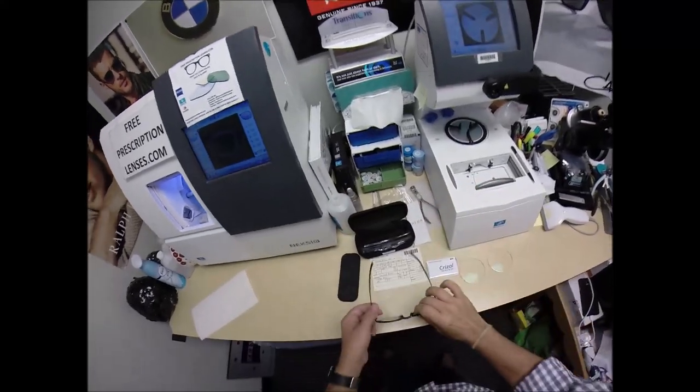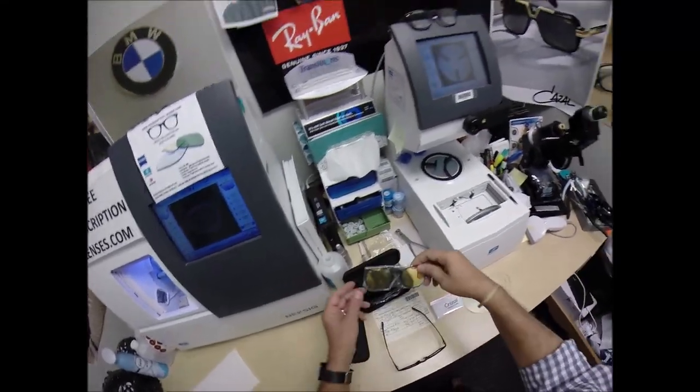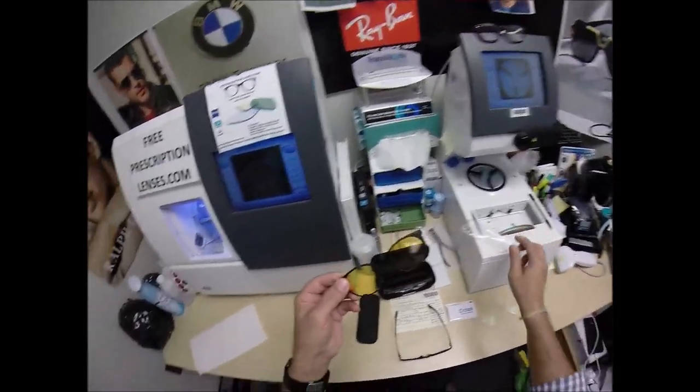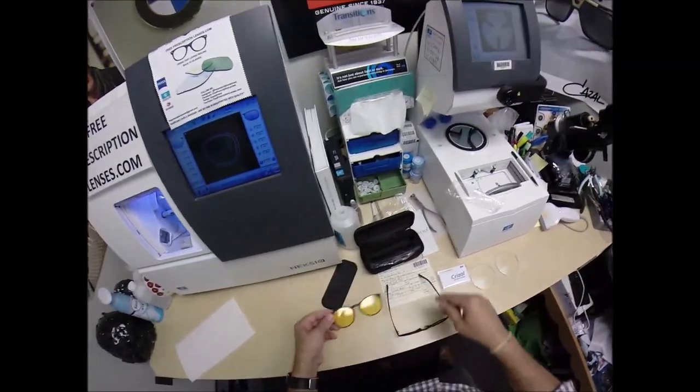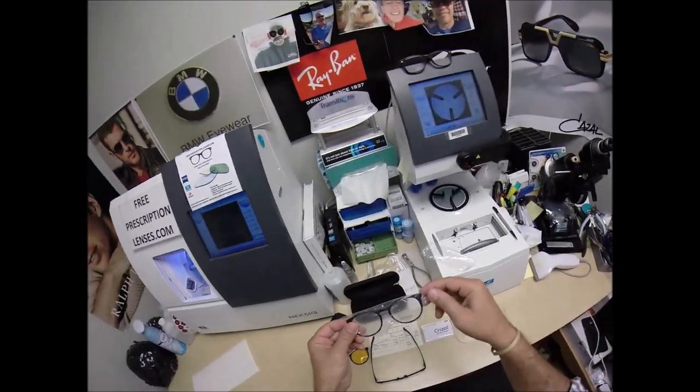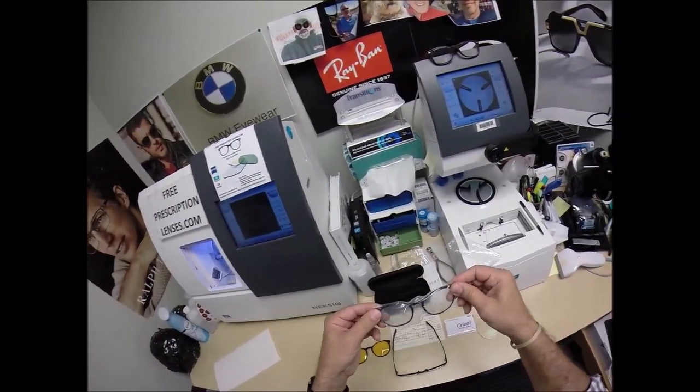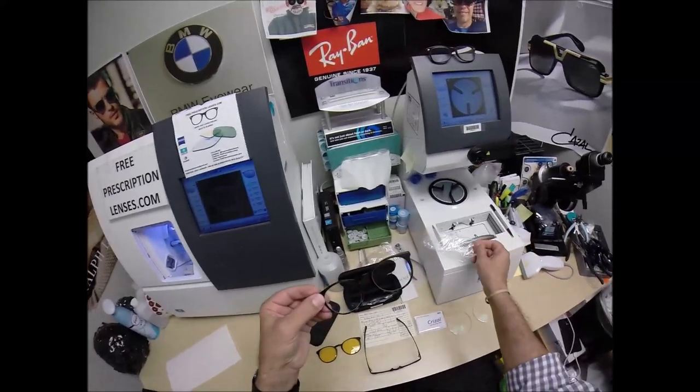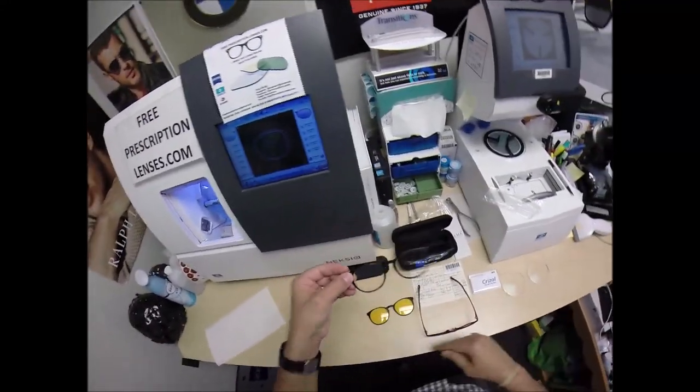But what I love about this frame, it comes with four clip-ons. Let me take everything out. There is a yellow nighttime fog. It's also known as a shooter's yellow. Skiers like it. It has an anti-glare clip with blue blocking ability for that can go over your lenses.